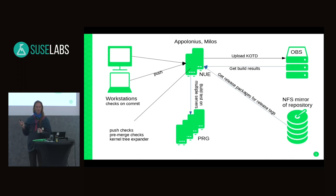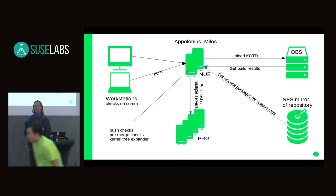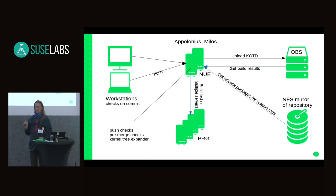There are workstations where you produce some patch and push it to KernCVS, which runs on Apollonius. There are checks that run on your workstation and some checks that Apollonius does — including applying the patches, verifying they can be applied, and trying to build some configurations, not all of them.